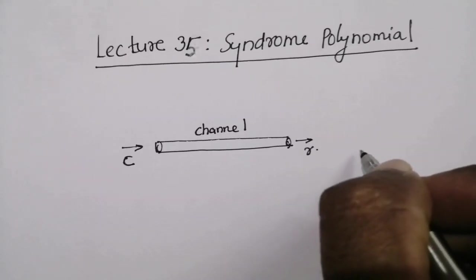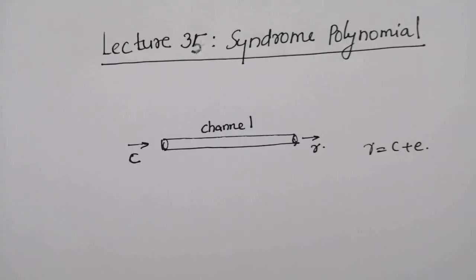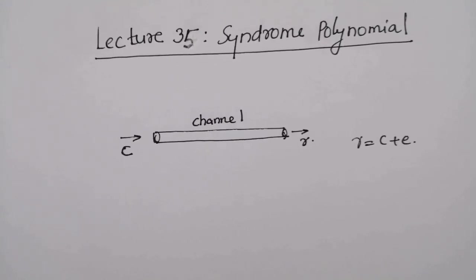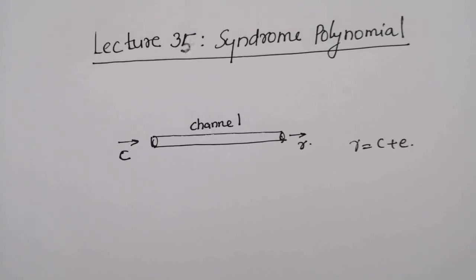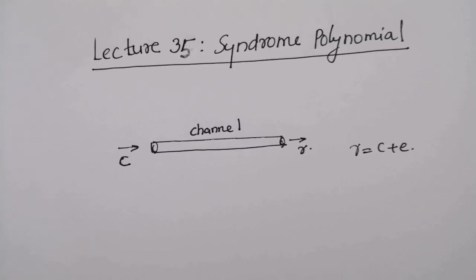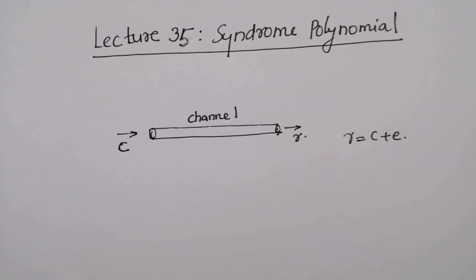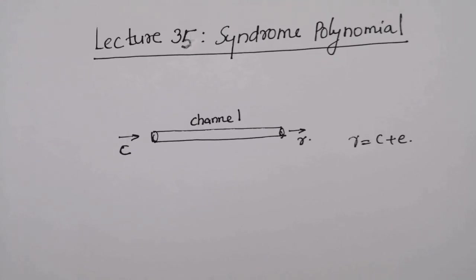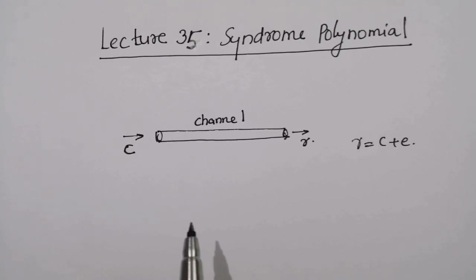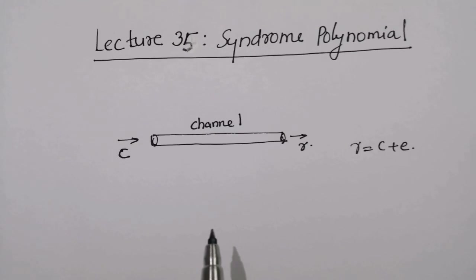We can say that r equals c plus e. For a linear block code, the first step involved in decoding is to calculate the syndrome for the received vector. If the syndrome is zero, there are no transmission errors. On the other hand, if the syndrome is non-zero, the received vector contains transmission errors which require correction. For cyclic code also, syndrome calculation is the first step in decoding.